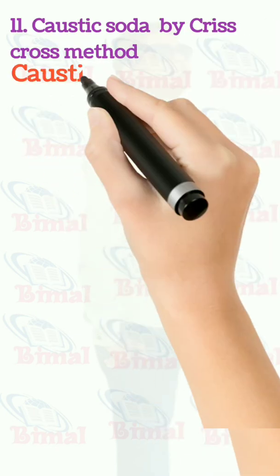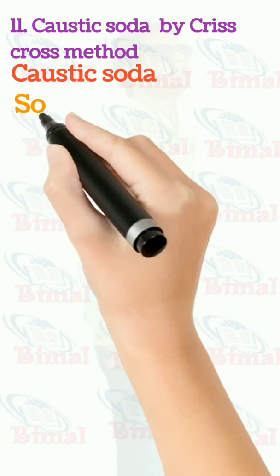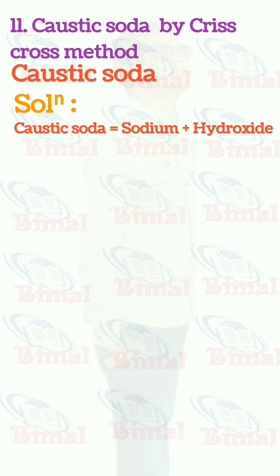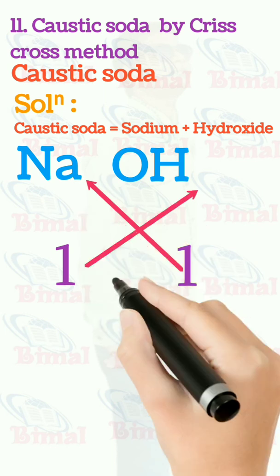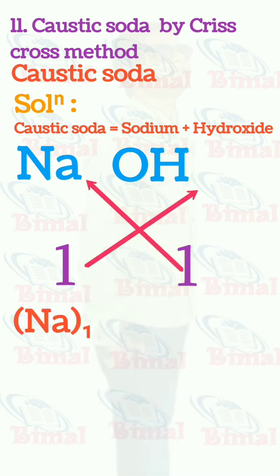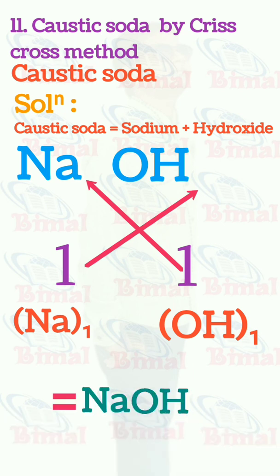Molecular formula of caustic soda by criss-cross method. Caustic soda is equal to sodium plus hydroxide. Symbol for sodium is Na, symbol for hydroxide is OH. Valency for sodium is 1, valency for hydroxide is 1. When we do criss-cross, the valency is exchanged and we write Na1 and OH1, which is equal to NaOH. We don't write Na1 or OH1, so NaOH is the molecular formula for caustic soda.